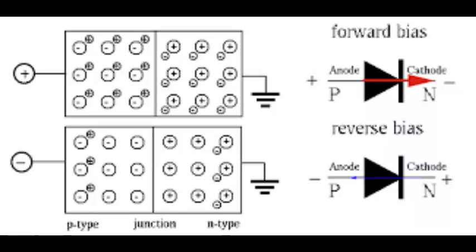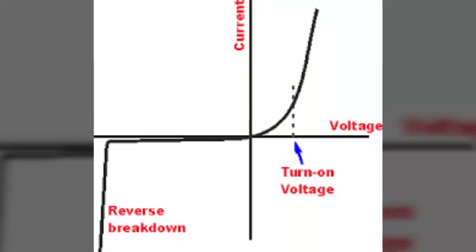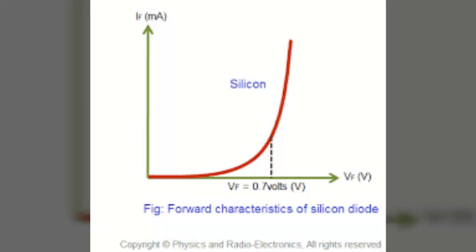Now next is the volt-ampere characteristics of a P-N junction, also known as VI characteristics. The characteristics can be studied under three heads: zero external voltage, forward bias, and reverse bias. Under zero external voltage, the circuit is open and the potential barrier does not permit current flow, so the circuit current is zero. Under forward bias, the potential barrier is reduced, and from that point onwards the current increases with the increase in forward voltage.